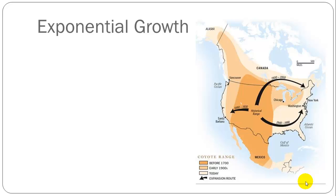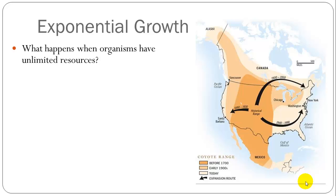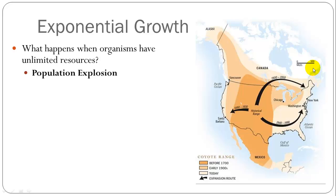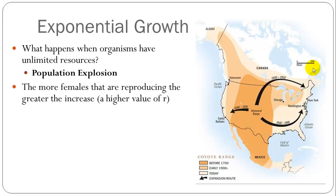The first type is exponential growth — what happens when organisms have access to unlimited resources. This is really what happened to the coyotes. They were restricted to the Great Plains and desert region of Mexico and the United States. After wolves were removed or significantly decreased from those areas, coyotes had access to all these resources, unlimited in habitat and food. Their population exploded — a dramatic increase. If you have more females, you have a greater potential to increase, a higher growth rate abbreviated as little r.